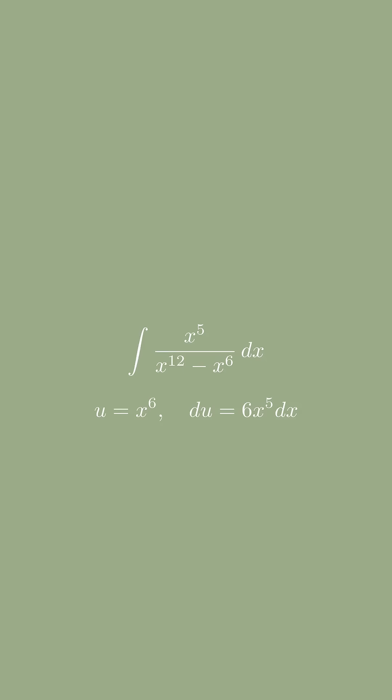Next, we substitute u equals x to the 6. So du equals 6x to the 5 dx.